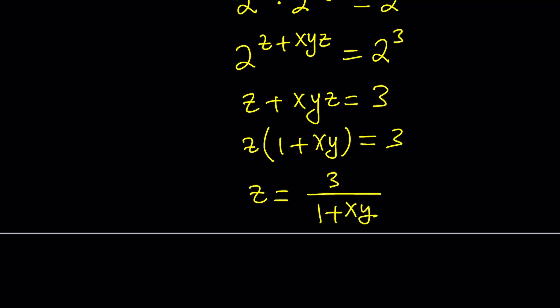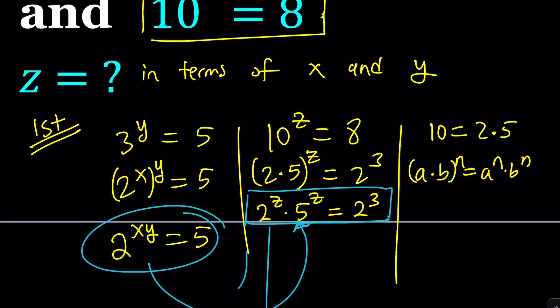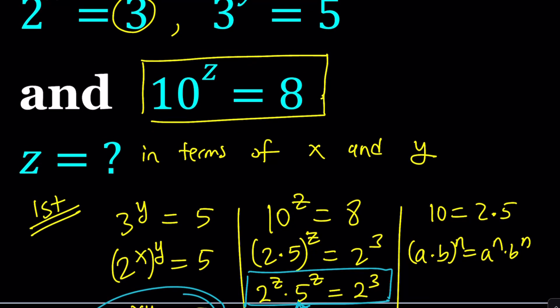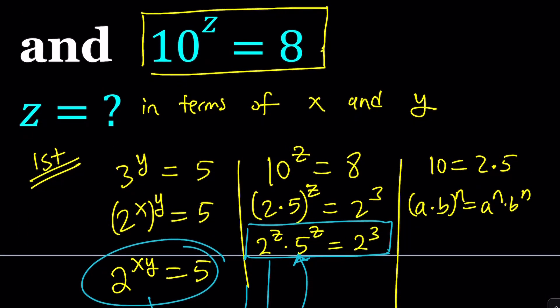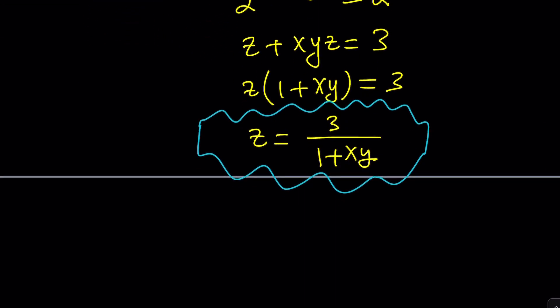That's the answer because we were looking for z. It was supposed to be in terms of x and y, and it is. Obviously, you can find other expressions for z, but this seems to be the most natural one. Again, z can be found numerically. x and y can be found numerically. That's actually going to be the basis for our second method. So, let's get to it.